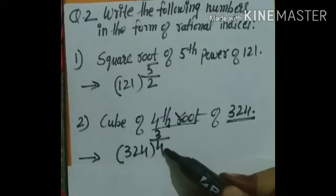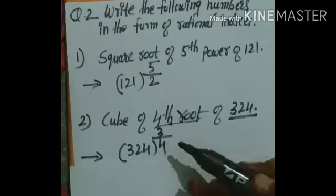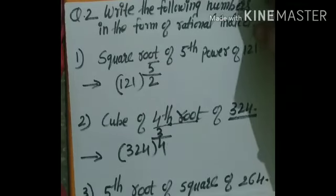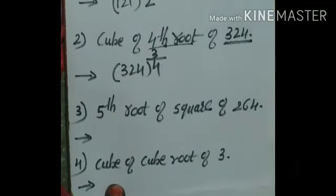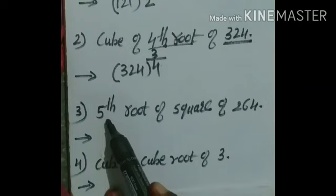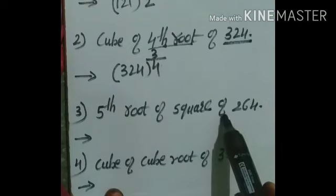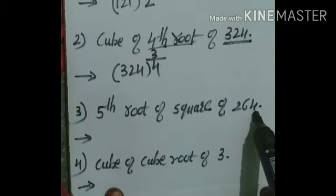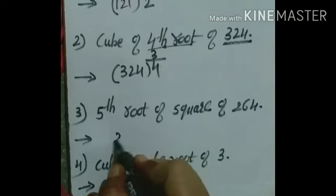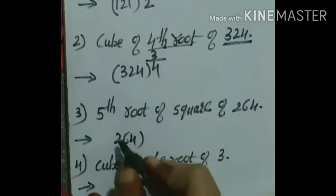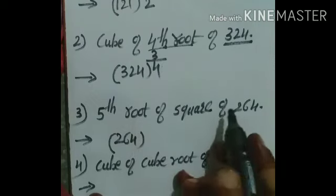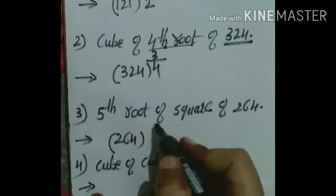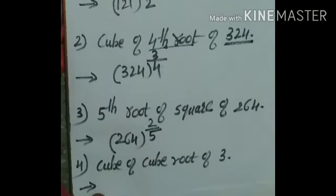Now the third question: fifth root of the square of 264. Here 264 is the base number. We write 264 raised to — fifth root means the denominator is 5, and square means the numerator is 2 — so: 264 raised to 2 upon 5.